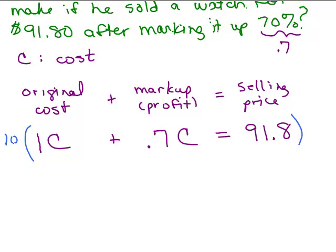I'm going to multiply both sides of the equation by 10. Now remember, you're multiplying all terms on both sides of the equation by 10. So let's do the first term. 10 times 1C will be 10C. Then I'm going to do 10 times 0.7C, that will give me a 7C. And then 10 times 91.8, that will move the decimal 1 to the right, 918.